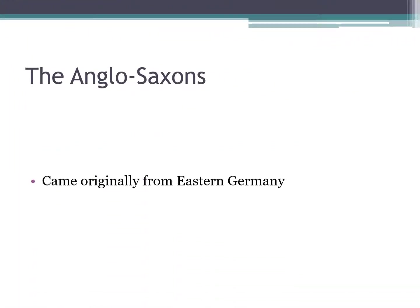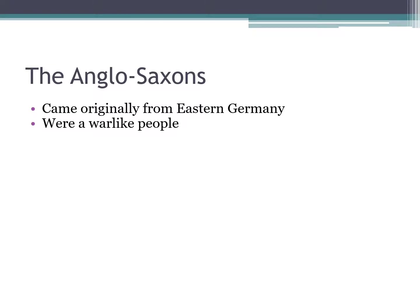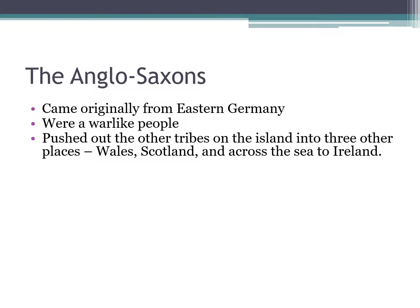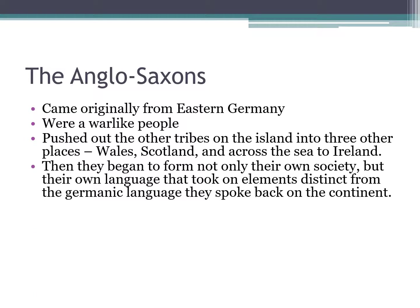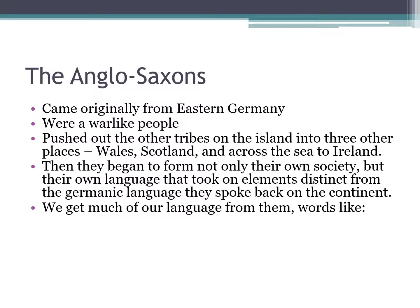The Anglo-Saxons came originally from eastern Germany and were a warlike people, constantly fighting with somebody. They pushed out the other tribes on the island into three places: Wales, Scotland, and across the sea to Ireland — which is why the Celtic language flourished there. They began to form not only their own society but their own language that took on elements distinct from the Germanic language they had spoken on the continent, forming a language we now call Old English, sometimes called Anglo-Saxon English.